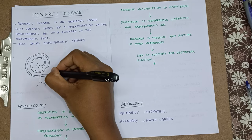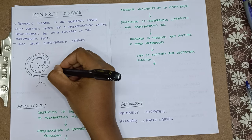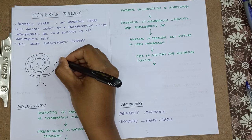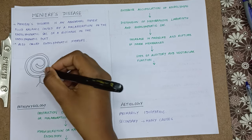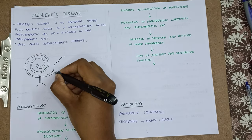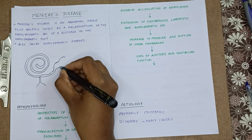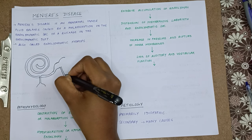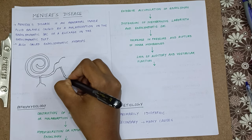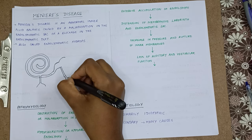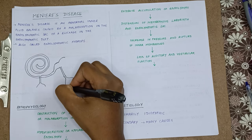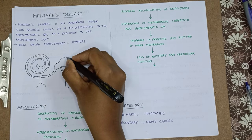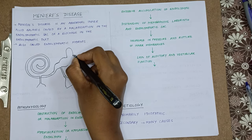This is going to continue as the ductus reuniens and continues as the saccule, then the utricle. From the saccule, there is going to be a duct which is the endolymphatic duct, and a sac which is the endolymphatic sac. Now there are three semicircular canals.